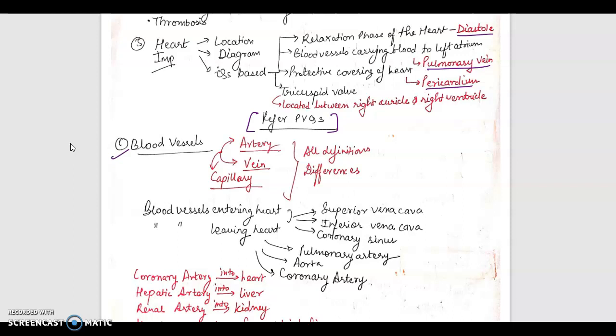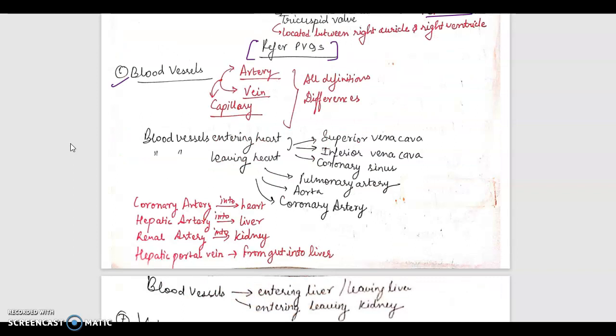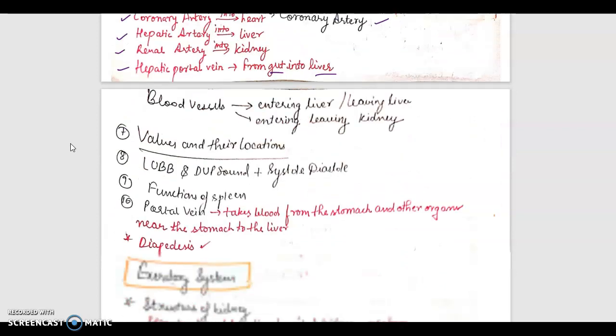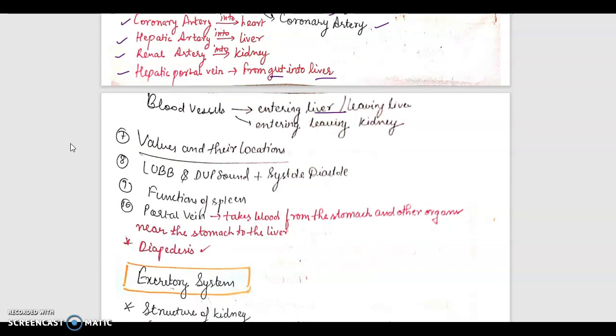Next is the important blood vessels entering heart and leaving heart. Before that, all definitions and differences of artery, vein, and capillary must be revised. Blood vessels entering heart: superior vena cava, inferior vena cava, coronary sinus. And leaving heart: pulmonary artery, aorta, and coronary artery. If I talk about coronary artery, it enters into heart. Hepatic artery into liver, renal artery into kidney, and hepatic portal vein from gut into liver.